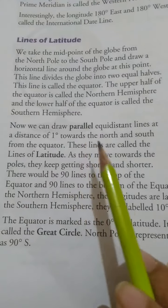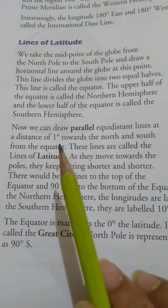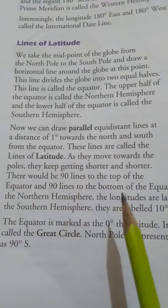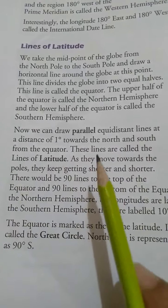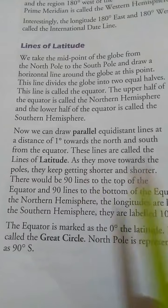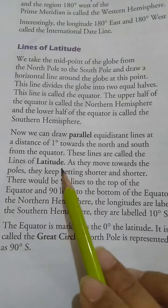Now we can draw parallel equidistant lines at a distance of 1 degree towards the north and the south from the equator. These lines are called the lines of latitude.